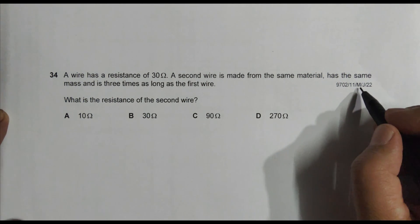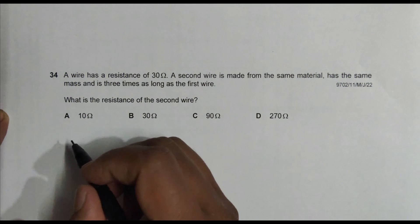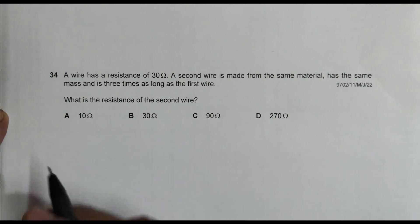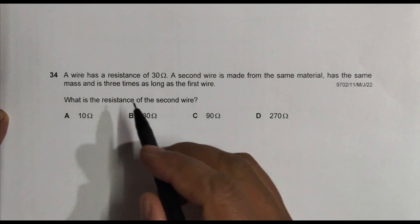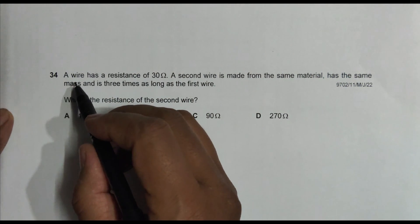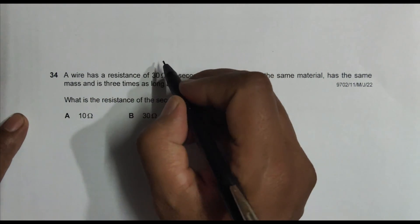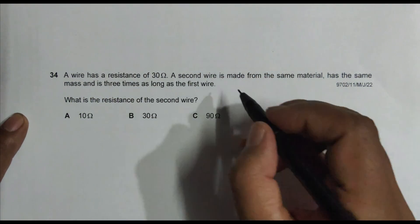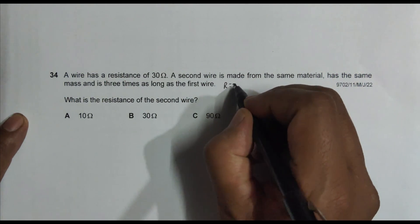Hello folks, this is 2022 May June paper 11, question number 34. This question is concerned with the chapter on electricity. It says that a wire has a resistance of 30 Ohm, so R is equal to 30 Ohm.